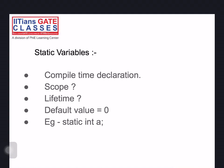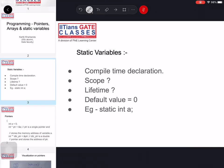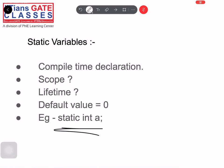Whenever a variable is declared, some memory is given to it. Memory can be given at runtime when the program is executing, or at compile time. Static variables are assigned memory at compile time itself. If you don't pass any value to the static variable, the default value stored during compile time will be zero.